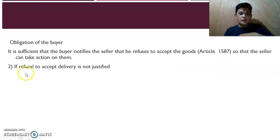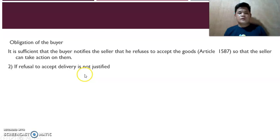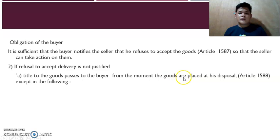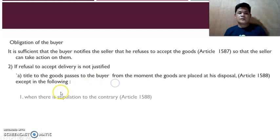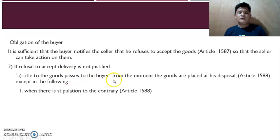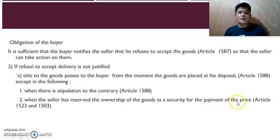Number two: if the refusal to accept delivery is not justified — meaning there is no valid reason to refuse delivery — title to the goods passes to the buyer from the moment the goods are placed at his disposal. Exceptions: number one, when there is a stipulation to the contrary; number two, when the seller has reserved the ownership of the goods as security for the payment of the price — meaning ownership will not transfer if the buyer has not made full payment.